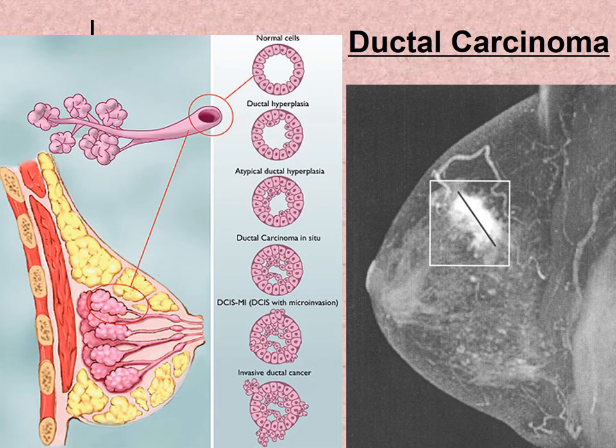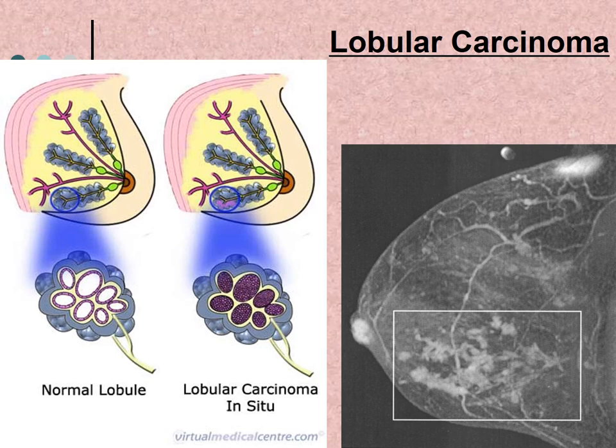This shows an ultrasound or mammography of ductal carcinoma and the progression the cancer goes through. This image shows lobular carcinoma on a mammogram, as well as the difference between a normal lobule and a lobule with carcinoma in situ.